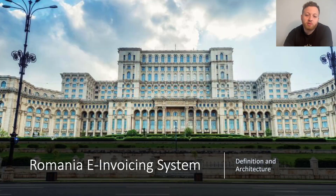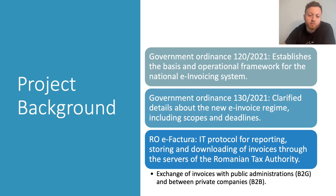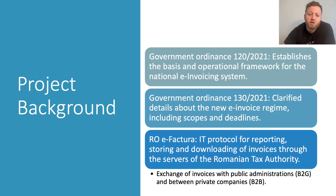Now we'll discuss the Romanian invoicing system. The project background specifically for Romania: Government Ordinance 120/2021 establishes the framework for the national e-invoicing system in Romania. Government Ordinance 130/2021 clarifies details about the new e-invoicing regime, including the scopes and deadlines for companies to meet. The Romanian e-Factura is the IT protocol for reporting, storage, and downloading of invoices through the Romanian tax authority. This can be government or B2B depending on what your business does.